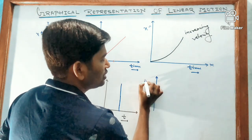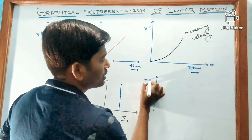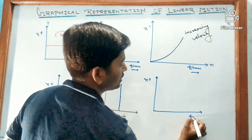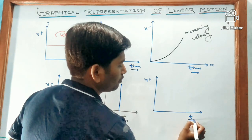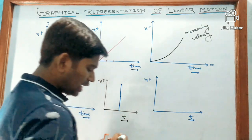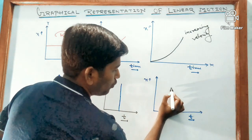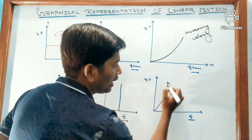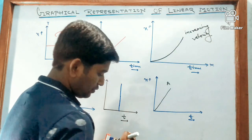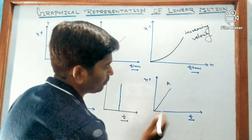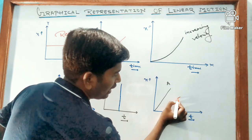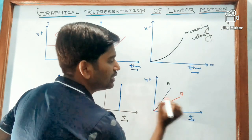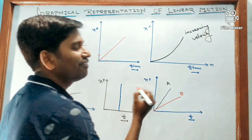Now one question related to this that is always asked: suppose two graphs are drawn — one for body A and another for body B — and it is asked which body is moving faster.